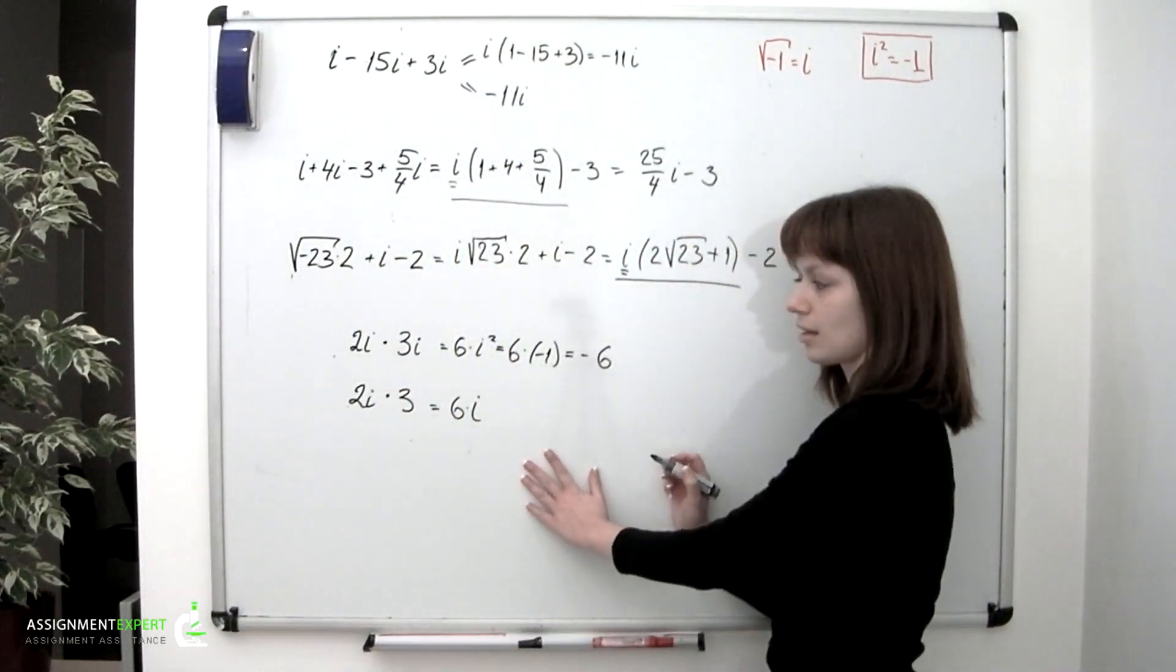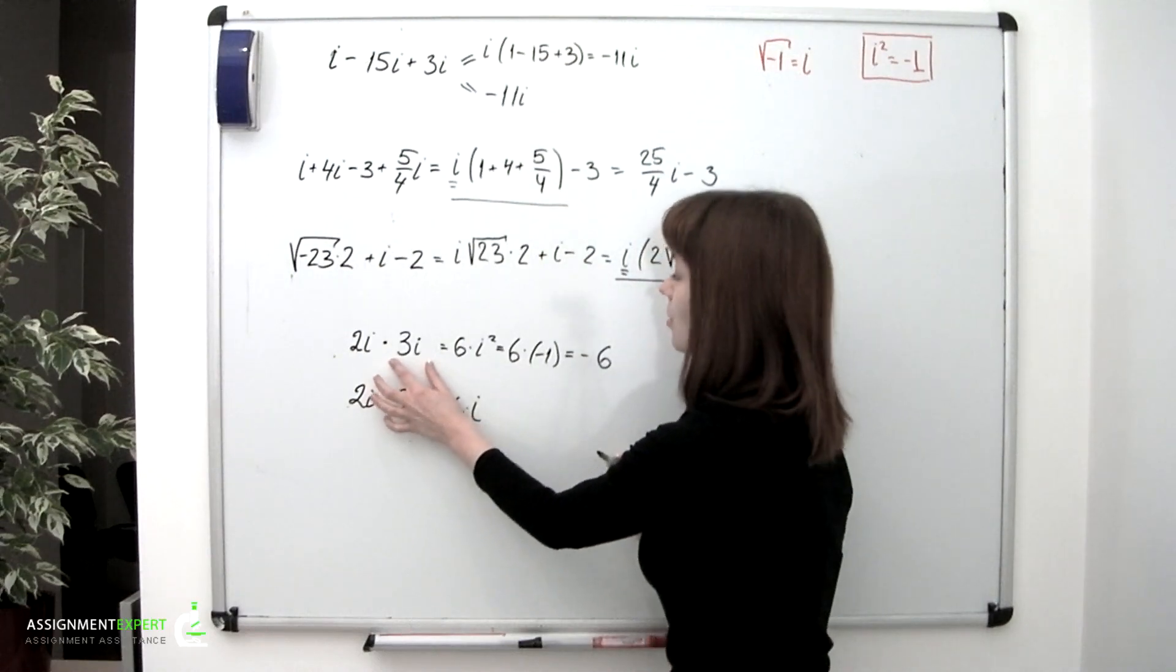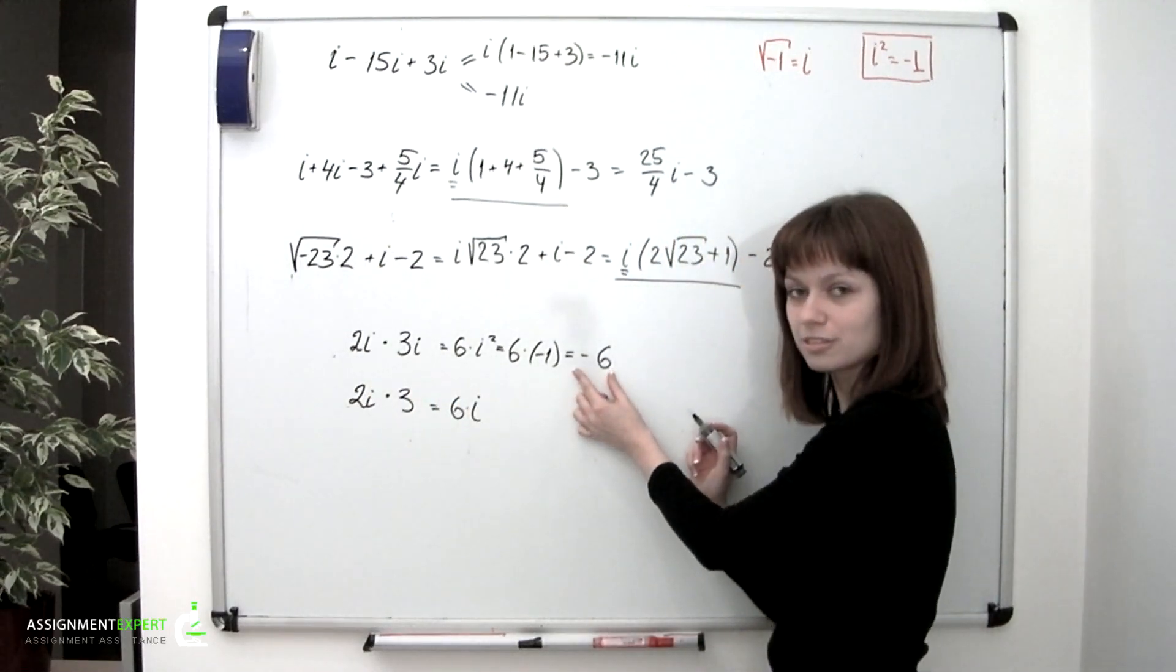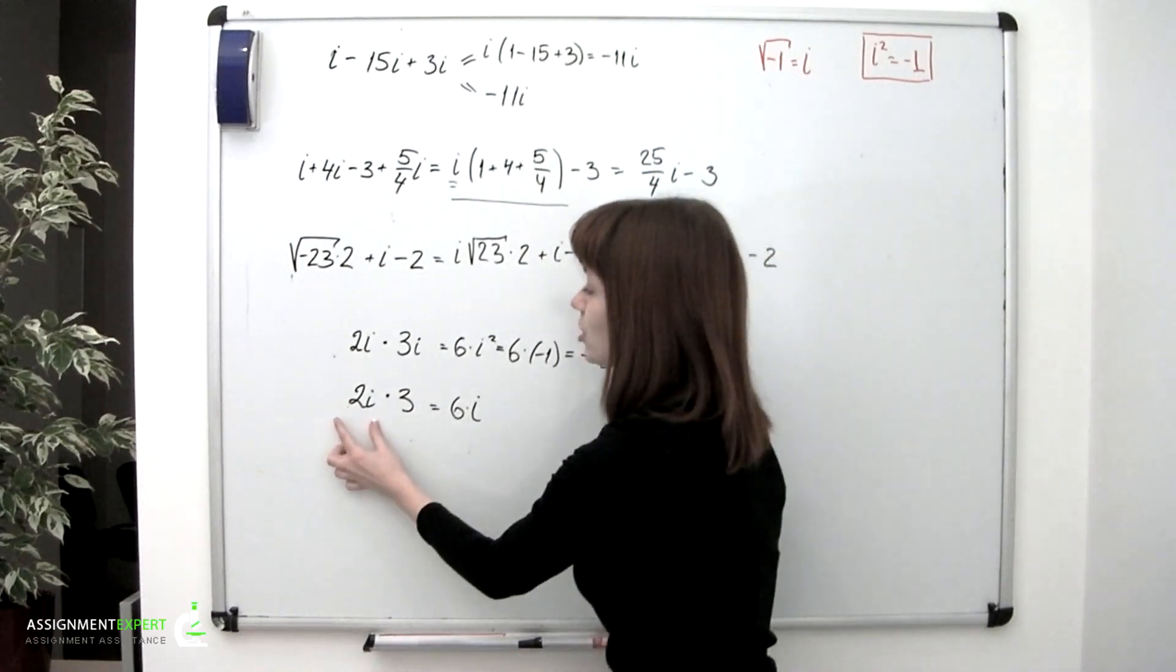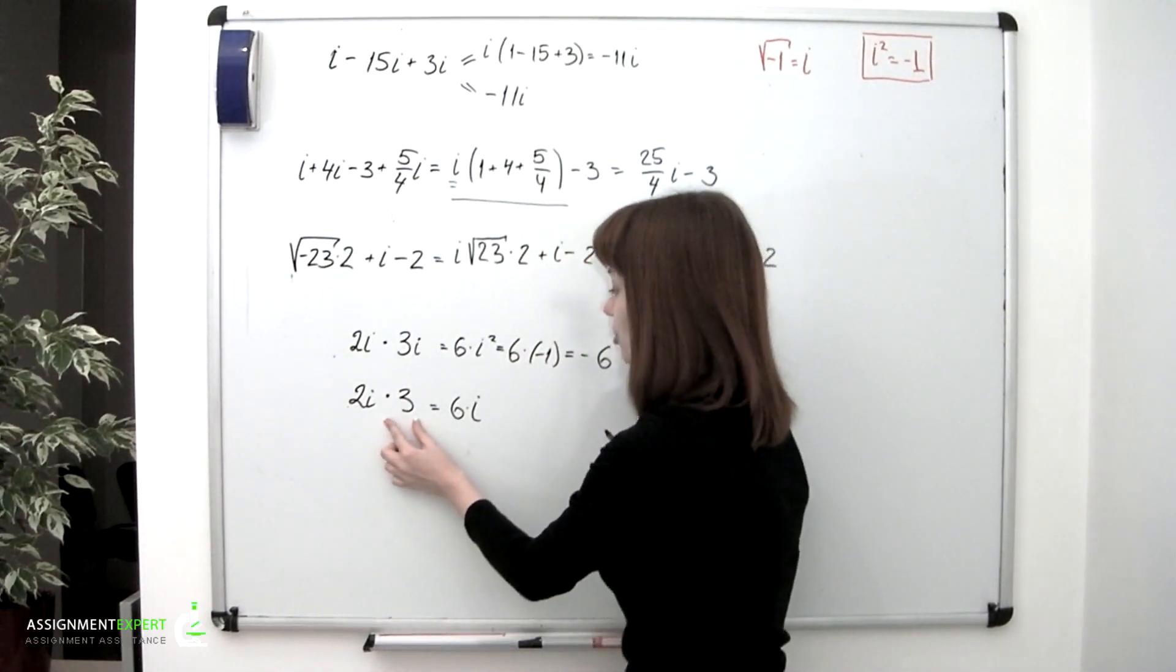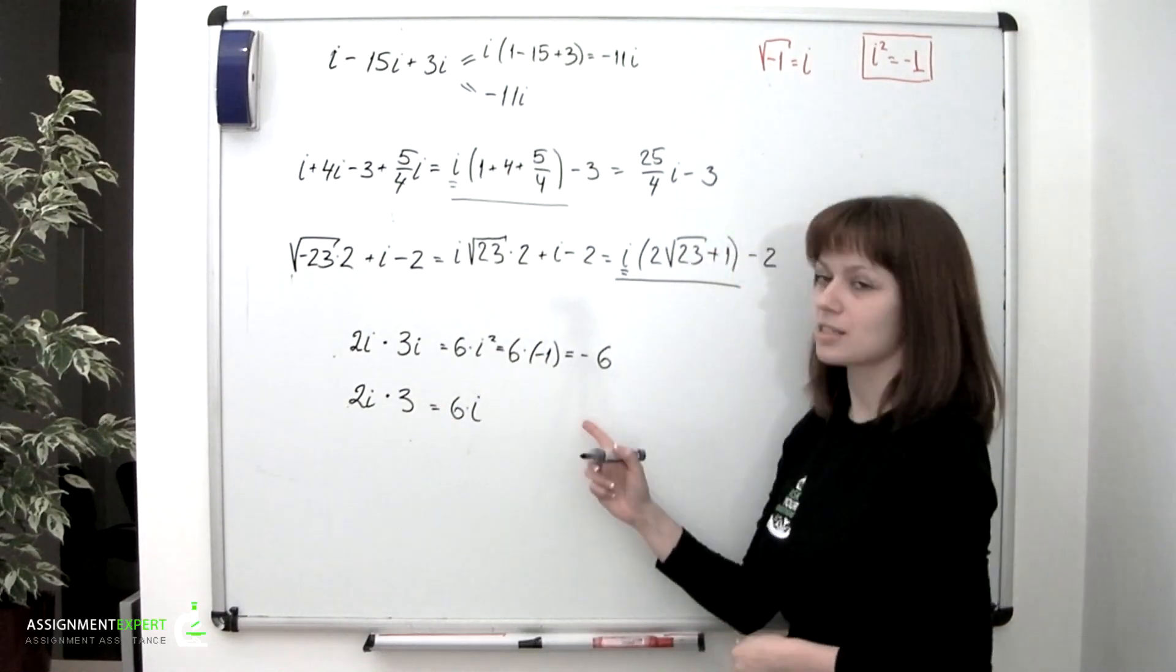Let's look closely. We multiplied two imaginary numbers, but we obtained a real number. Their product was a real number. But then we multiplied an imaginary number by a real number and still obtained an imaginary number. And that is a thing to remember.